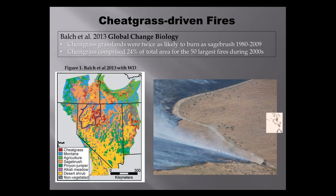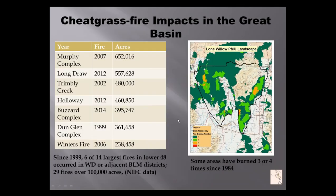She had one-kilometer resolution land cover maps. The areas in red are cheatgrass, and the Winnemucca District BLM office is outlined in purple — there's lots and lots of red in our district. Since 1999, six of the 14 largest fires in the lower 48 have occurred either in the Winnemucca District or adjacent BLM districts like Twin Falls and Elko. Over that time period, we've had 29 fires over 100,000 acres — definitely a major trend for fire in these areas that have a lot of cheatgrass cover.